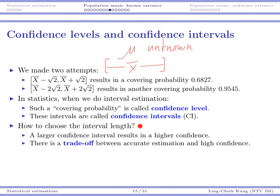How may we choose the interval length? We know that a larger confidence interval always results in higher confidence, so there's really a trade-off between accurate estimation and high confidence. High confidence means the probability for us to be right is higher. Unfortunately, accurate estimation requires your leg length to be small. If you choose a small leg length, the hitting probability would be small and you have low confidence. If you need high confidence, you need a longer leg length, and then your estimation becomes less accurate.